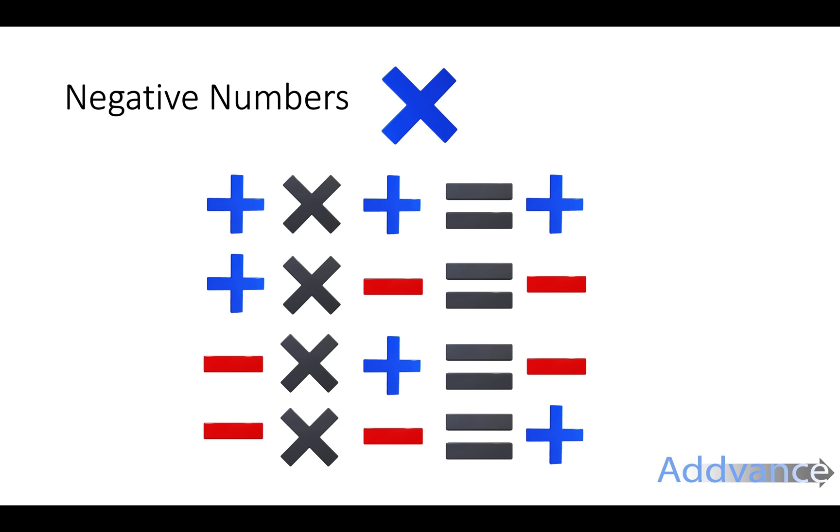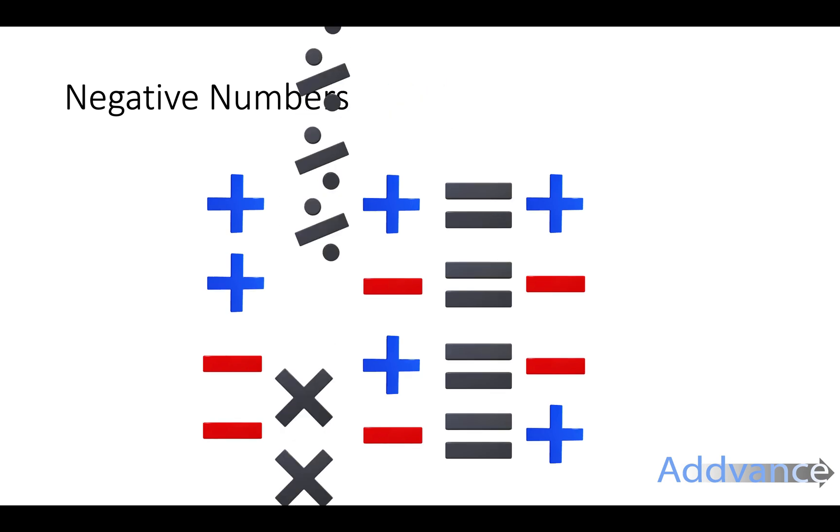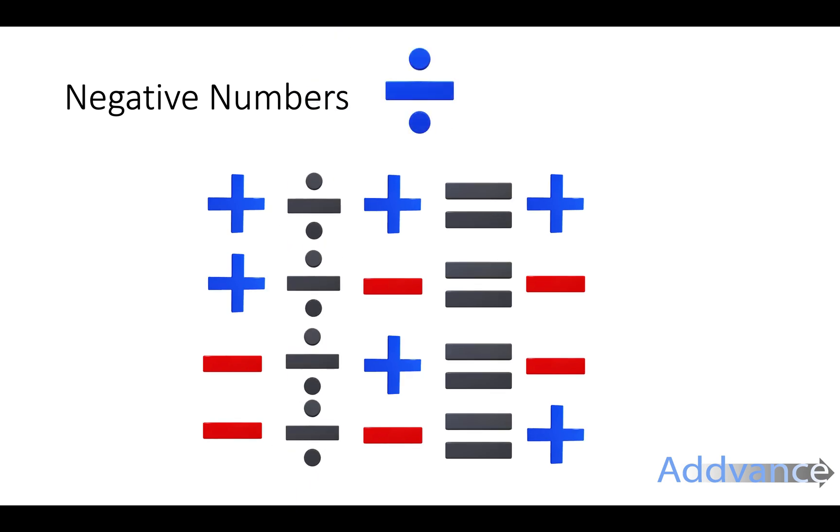Now, the rule is exactly the same for dividing. A positive divided by a positive is a positive. A positive divided by a negative is a negative. A negative divided by a positive is a negative. A negative divided by a negative is a positive.